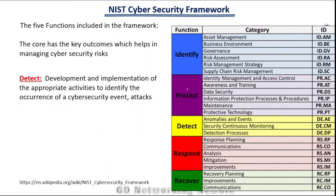The third function is Detect. In the Detect phase, organizations need to have something working so that they can identify events and identify attacks — like an intrusion detection system. It means there is development and implementation of appropriate activities to identify the occurrence of cyber security attacks, detecting anomalies or events, with security control monitoring and detection processes in place.